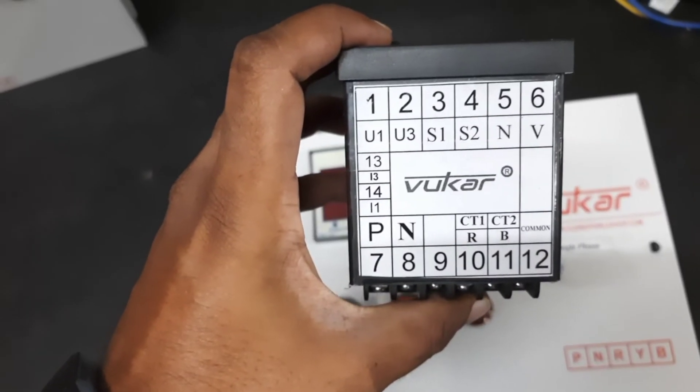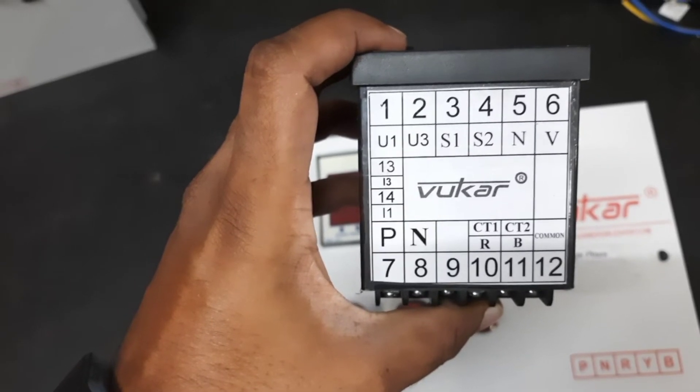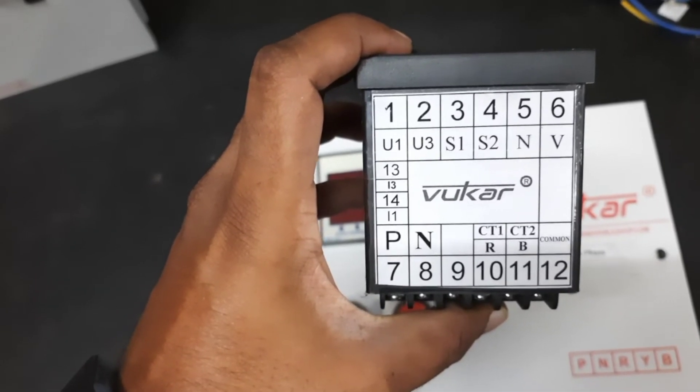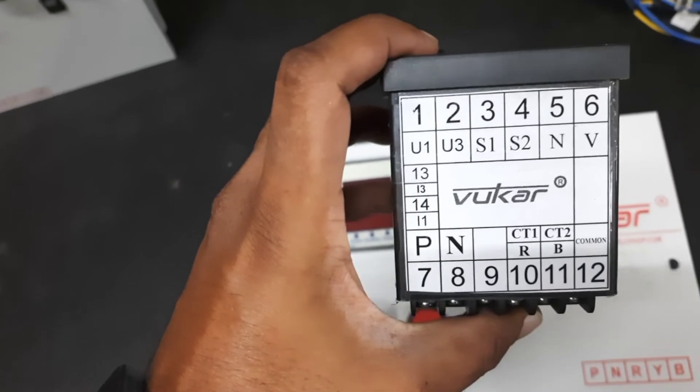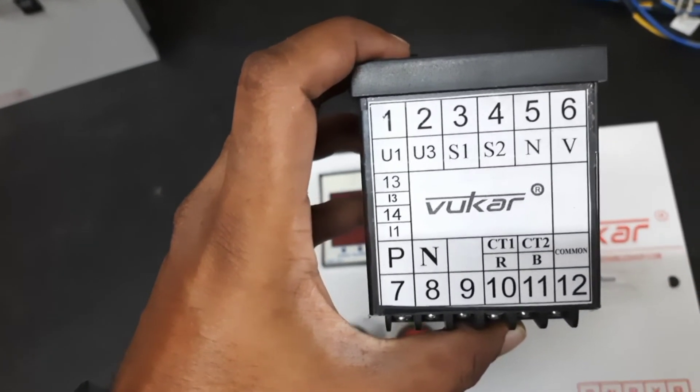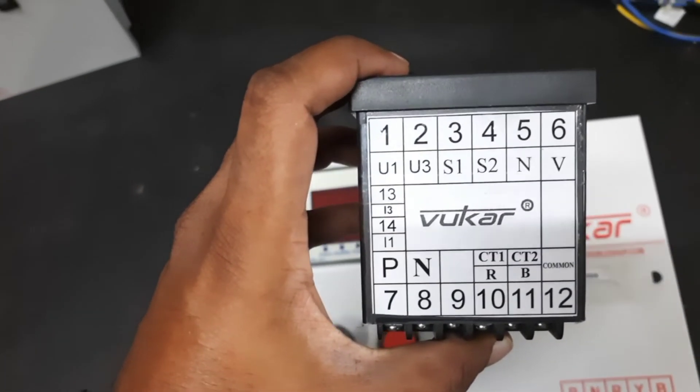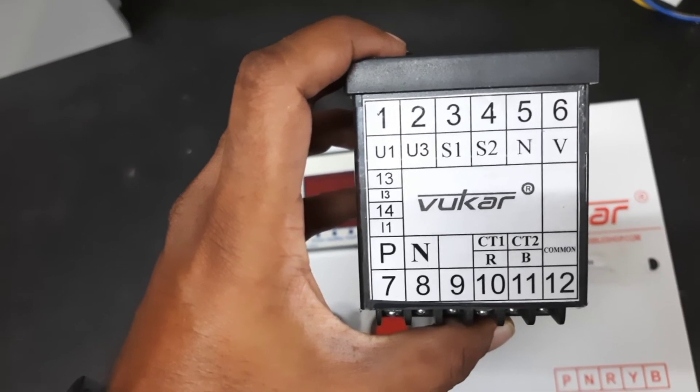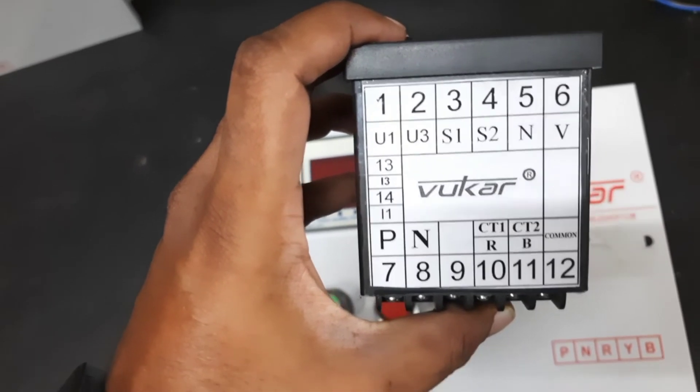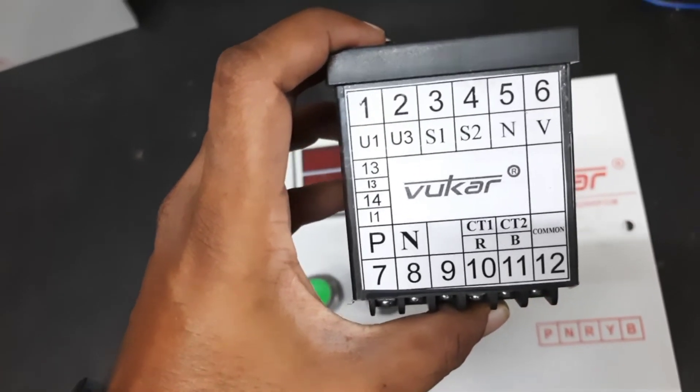Here in the digital meter you can see terminals 1, 2, 13, and 14. That is used for the water level controller. So if water level controller is used, in that case U1, U3, L1, and L3 will be used. Otherwise it will not be used.